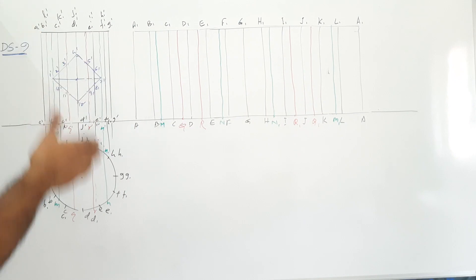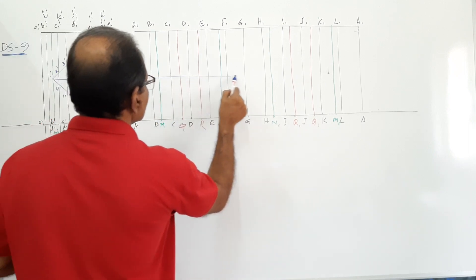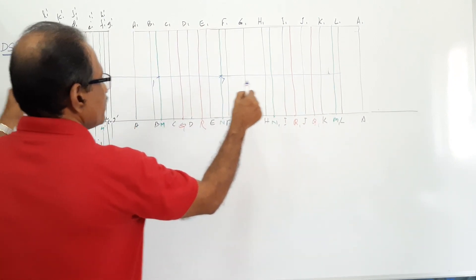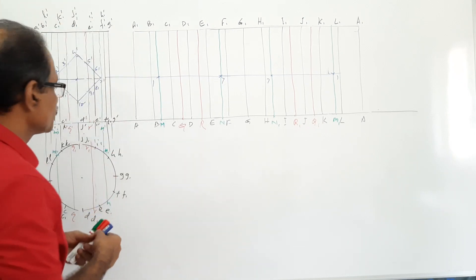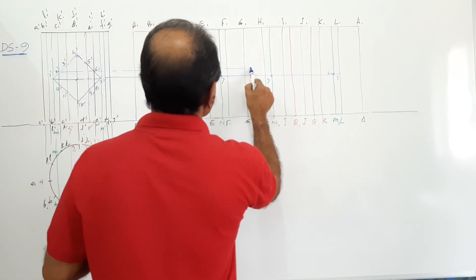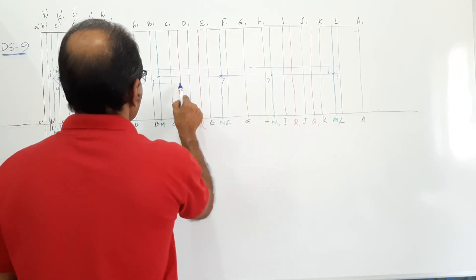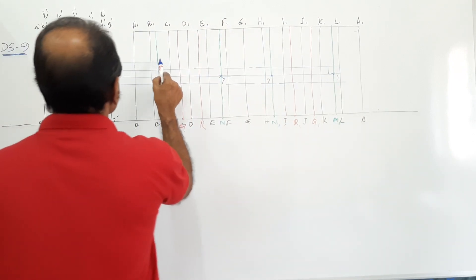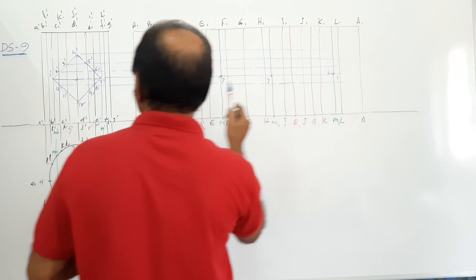You now have all the vertical lines where the points are to fall. Draw a horizontal line through point one in one direction — this is point one, this is point seven — and assume the same names on the other side. Mark two-dash and six-dash, then three-dash and five-dash, then four-dash.